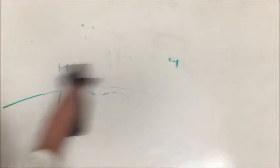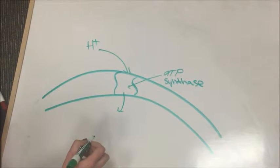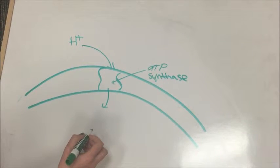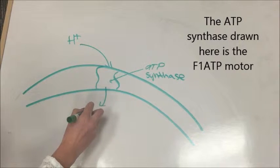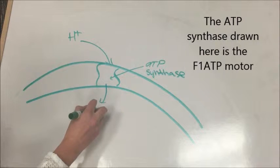So why do cells want a proton gradient across their inner membrane, or plasma membrane in the case of prokaryotes? The key is the biomolecular motor, F1 ATP. This motor works by rotating to produce energy. Just as a fan rotates by having air flow through it, the rotation of the F1 ATP motor is caused by the flow of protons.